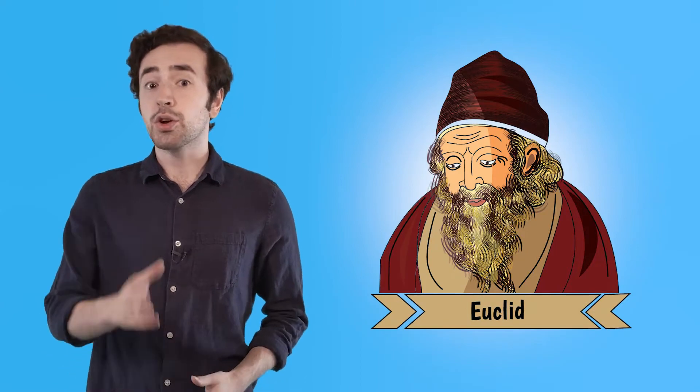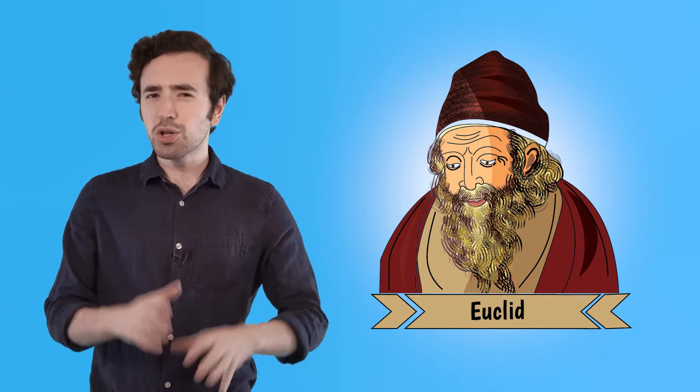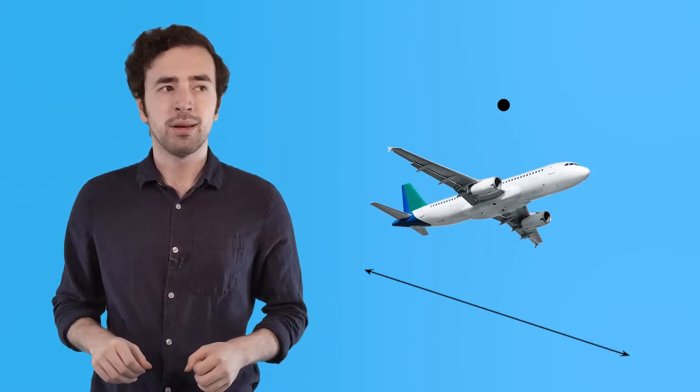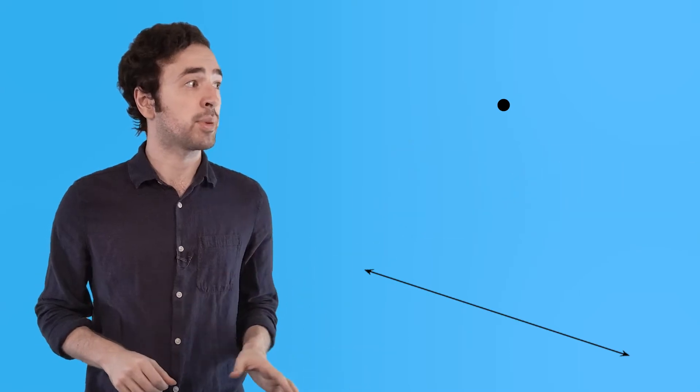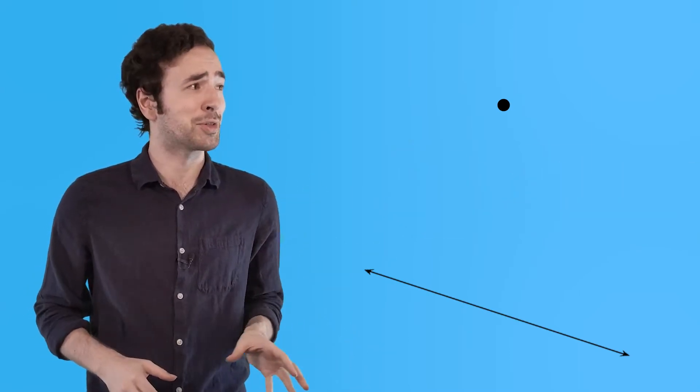'Twas the year 300 BC. Euclid of Alexandria, the Greek mathematician, was working with what he called points, lines, and planes. No, not that kind of plane. They did not have that in 300 BC.